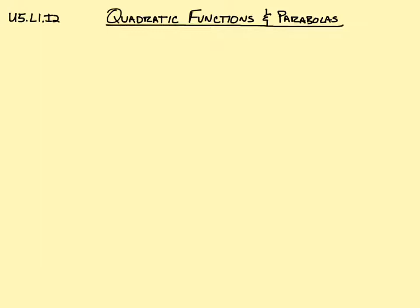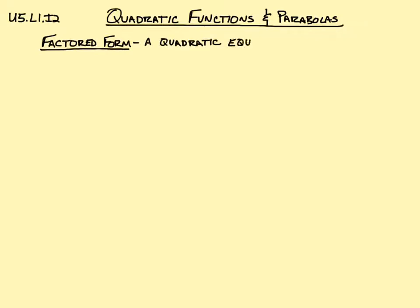In this investigation we looked at our quadratic functions in what we called factored form. Factored form is when a quadratic equation or expression is written with the x-intercepts already put into it, so that when we look at the function we can quickly identify where the x-intercepts are.